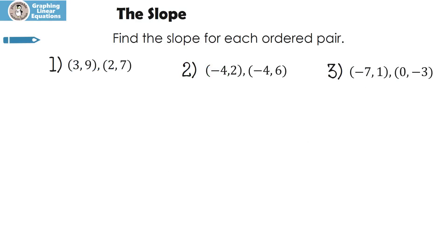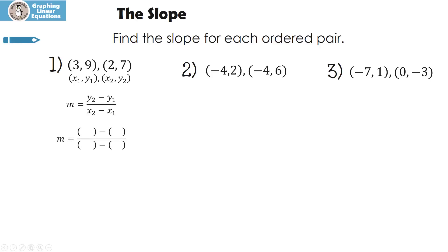Now here's your turn to practice. You're going to find the slope for each ordered pair. Pause the lesson, figure it out, then press play to check. The first thing I like to do is label my points: x1, y1, and x2, y2. Here's my formula — I like to put parentheses around my variables. Seven is y2, nine is y1, two is x2, and three is x1. Seven minus nine is negative two, and two minus three is negative one. A negative divided by a negative is a positive, so m is 2 — that's my slope.